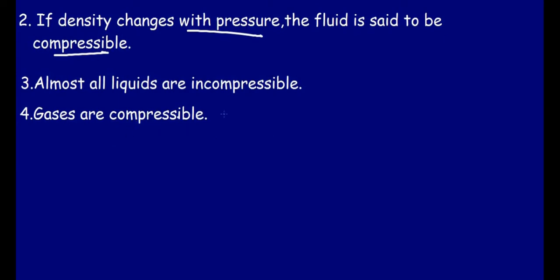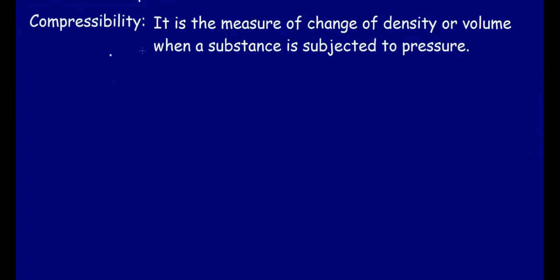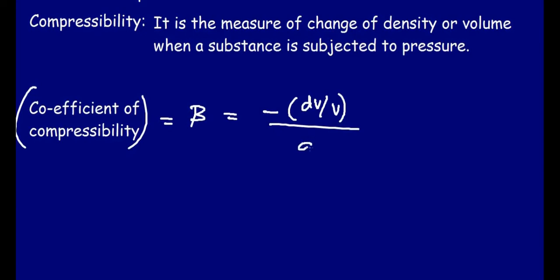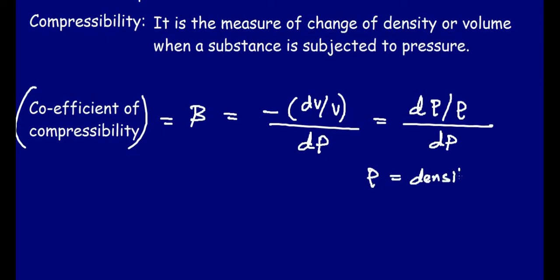Compressibility is the measure of change of density or volume when a substance is subjected to pressure. The coefficient of compressibility is denoted by beta and is equal to minus dV/V divided by dP. It can also be written as d(rho)/rho divided by dP, where rho is density.